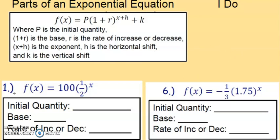Let's look at number 1. f(x) = 100(1/2)^x. Looking at this, our initial quantity is the number in front of the parenthesis. That's 100. So we're going to write 100 on the blank. The base is what's inside the parenthesis that has the exponent on it. The base in this case is 1/2, 1 over 2.